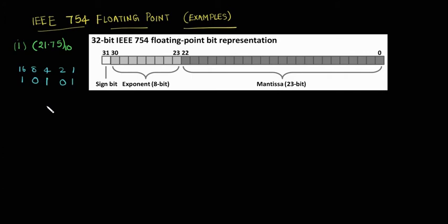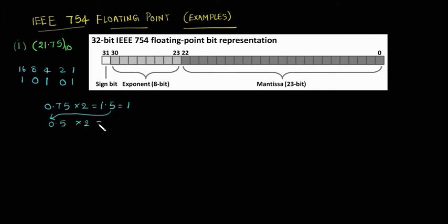Now for 0.75: 0.75 times 2 gives 1.5 — we consider the integer part 1. Then 0.5 times 2 is 1.0 — we consider the integer value 1. And 0.0 times 2 is 0. So this is the binary equivalent of 0.75, which is .11.